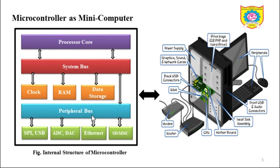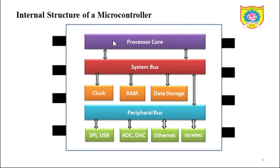You can see that the internal structure of a microcontroller has similar components to those of a computer's CPU — that is why we can call a microcontroller a mini computer. The figure shows the internal structure of a microcontroller. Assuming an 8-pin IC, inside you will find a processor core (CPU), a system bus, a peripheral bus. Connected to the system bus are the clock and memory devices, and to the peripheral bus are ADC, DAC, USB — in short, peripherals.